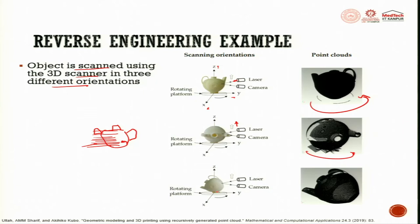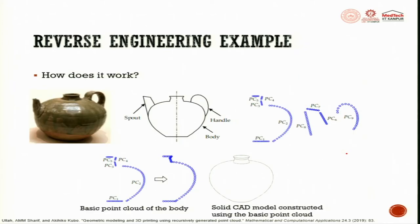Then a second orientation — the object is inverted or placed at about 90 degrees and rotated again. This second orientation is also required for the model information, collecting data from the bottom to above. Then a third orientation at about a 45-degree angle gives another view of the object. These three orientations together give us the total information of the object. As output, we get the point clouds — point cloud 1 through 5 represent the body, point clouds 6, 7, and 8 represent the spout.